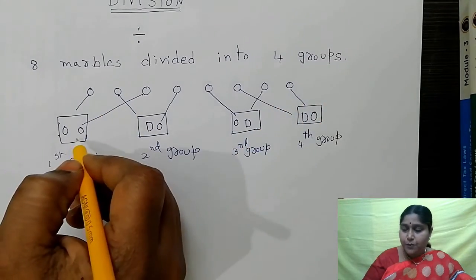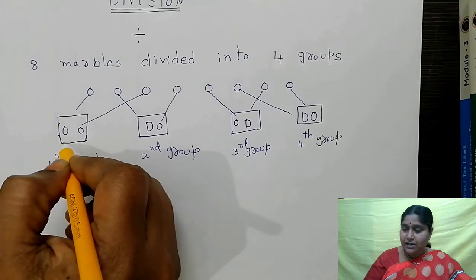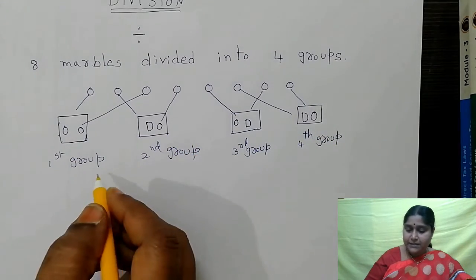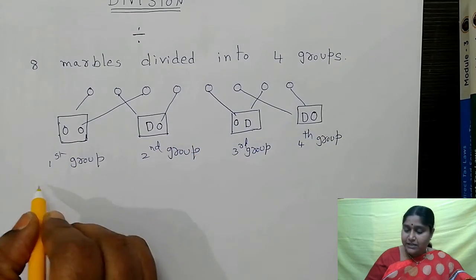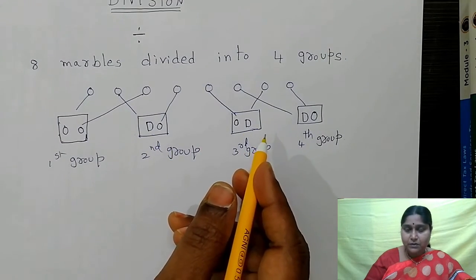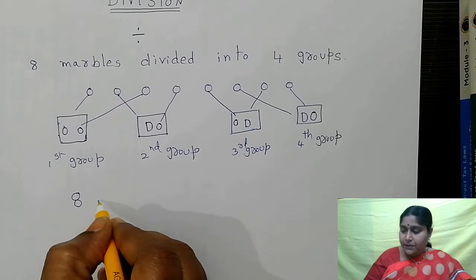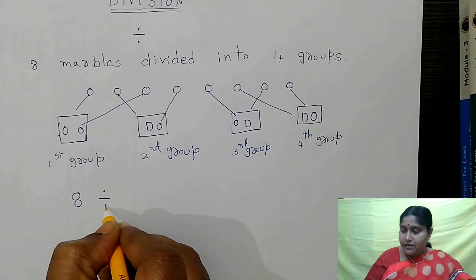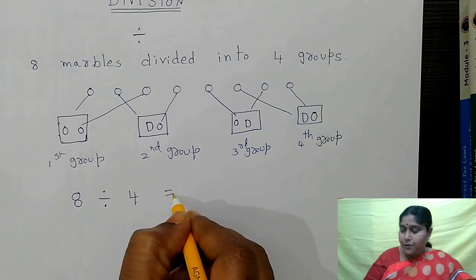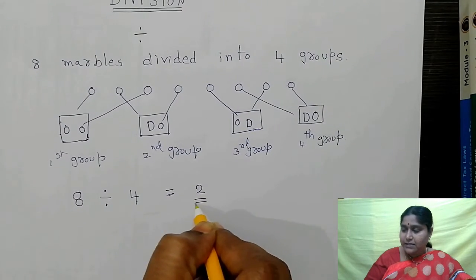Now, in each group, how many marbles are there? 2 marbles. See, in each group we get 2 marbles. That means we can see that each group will have 2 marbles. That means 8 total marbles divided into 4 groups equals 2 in each group. This is the answer.